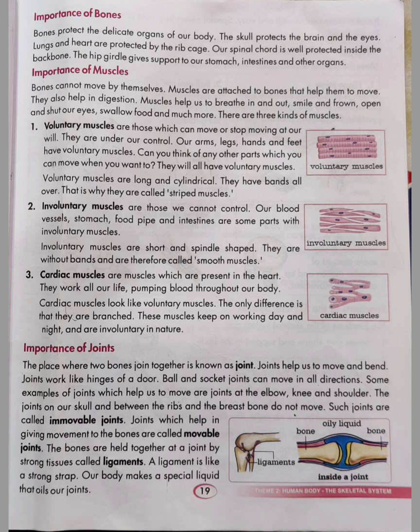Next comes the importance of joints. The place where two bones join together is known as a joint. Joints help us to move and bend — they work like the hinges of a door. Ball and socket joints can move in all directions. Some examples of joints that help us to move are the elbow, knee and shoulder. The joints on our skull and between the ribs and the breast bone do not move — these are called immovable joints.